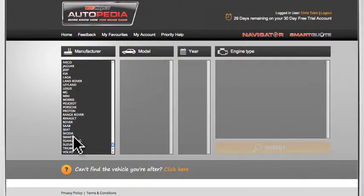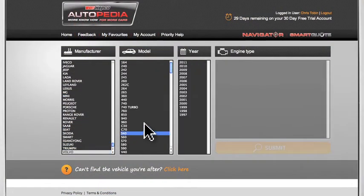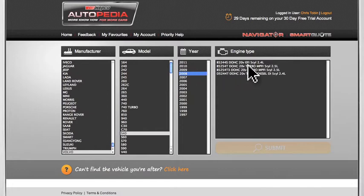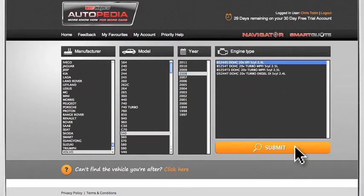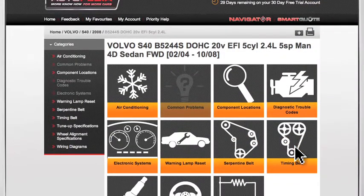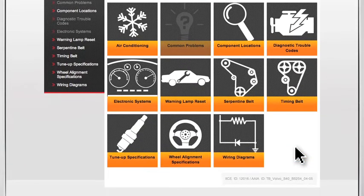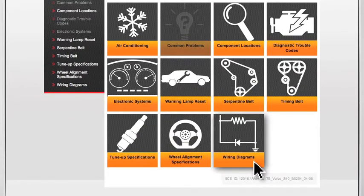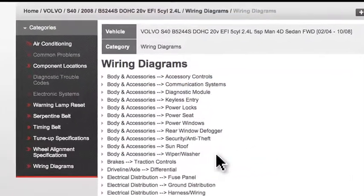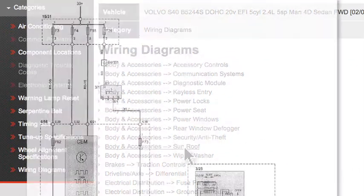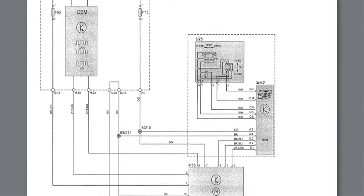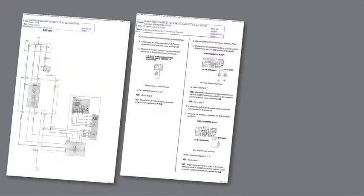Using the example of a Volvo S40, 2008 model, fitted with the 2.4 litre engine, let's get some information for the electric sunroof circuit by simply clicking on the wiring diagrams icon and selecting the sunroof diagram from the available list. Like all Autopedia content, these diagrams can be printed for use at the vehicle.